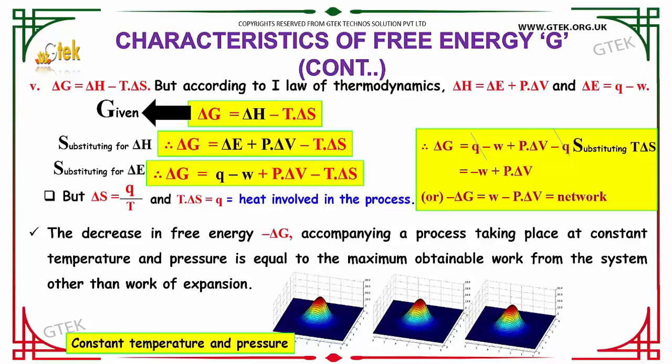Replacing T into delta S by Q, you will be getting this one. So minus delta G is equal to W minus P into delta V, which is the network.